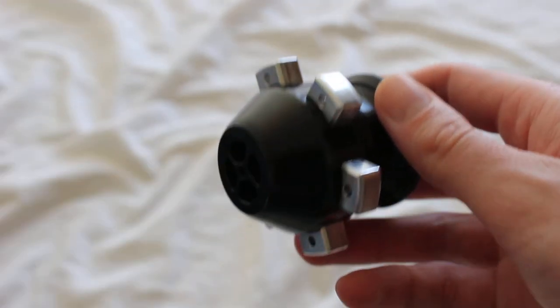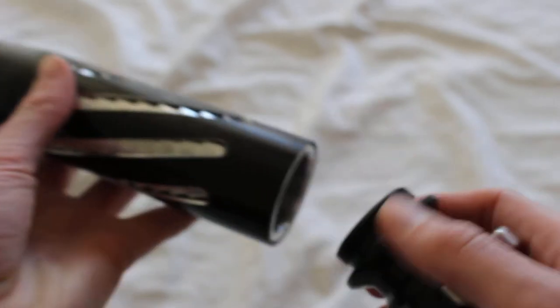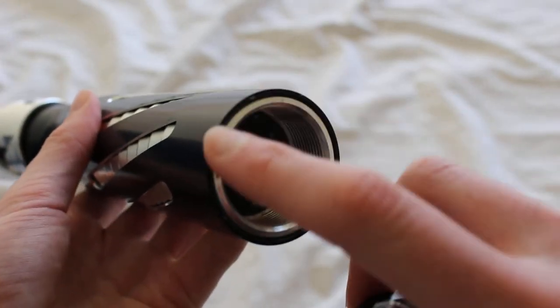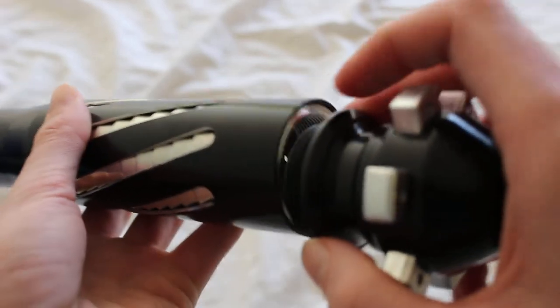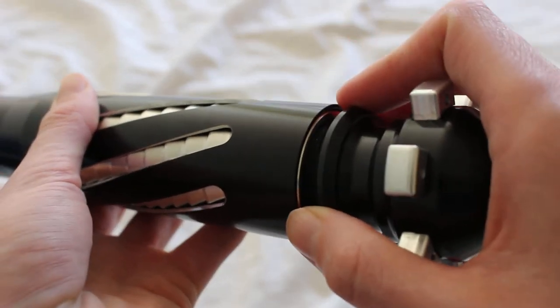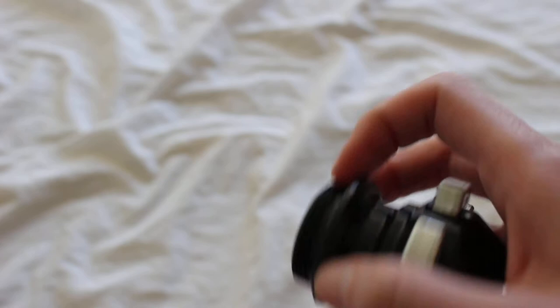For example, this pommel actually came with this Dark Mantis, and the Dark Mantis has a little bit wider of a diameter because of the sleeve, so that's why this pommel works better with it, this so-called replacement pommel.